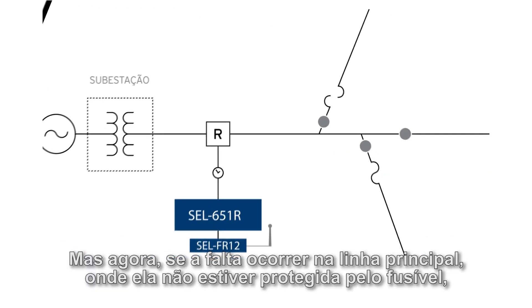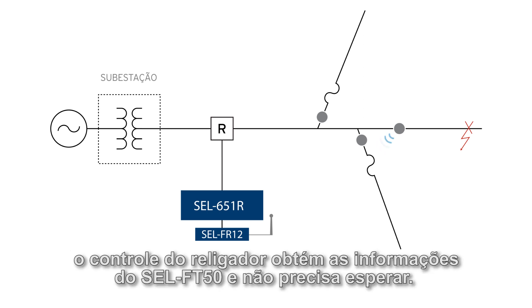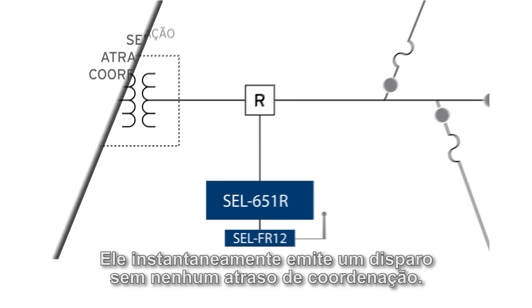But now if the fault happens on the mainline where it's not protected by the fuse, the recloser control gets the information from the FT50 and it doesn't need to wait. It instantaneously trips without any coordination delay.